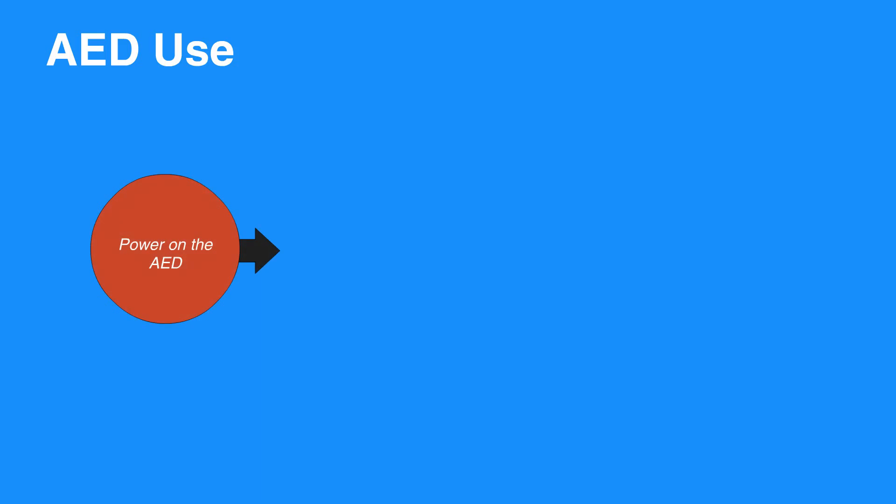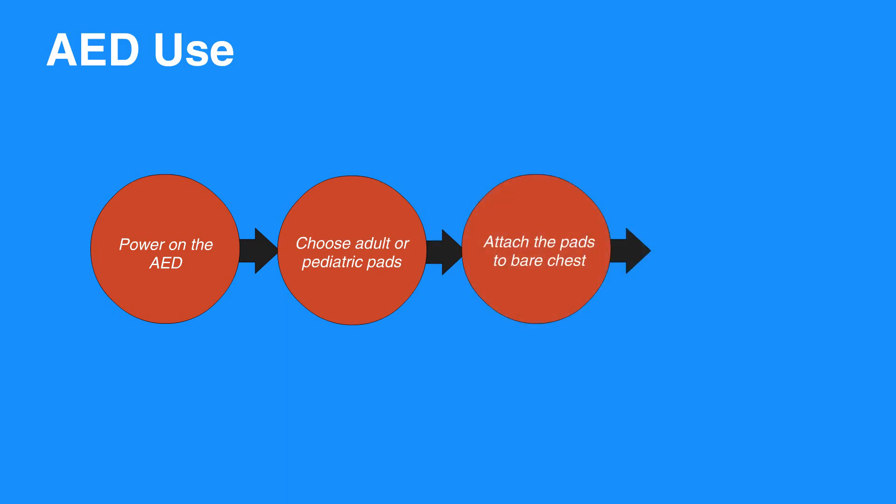Let's review the basic steps of using an AED. First, power on the AED. Choose adult or pediatric pads. Attach the pads to bare chest and make sure cables are connected. Be sure not to attach the pads over any medication patches and dry the chest if necessary. Place one pad on the upper right side and the other on the chest a few inches below the left arm.